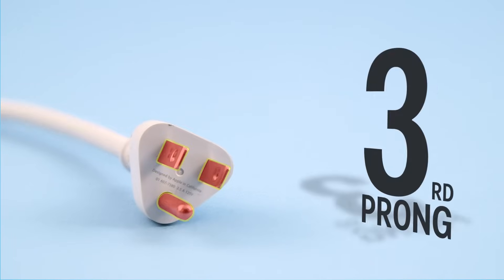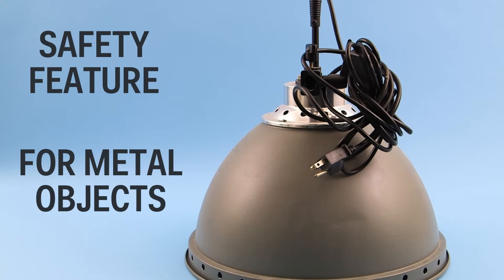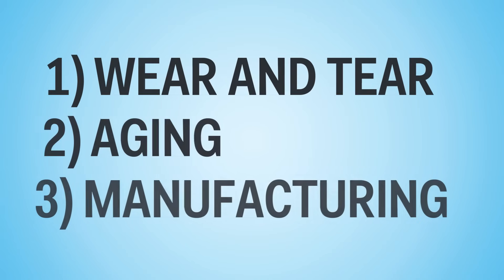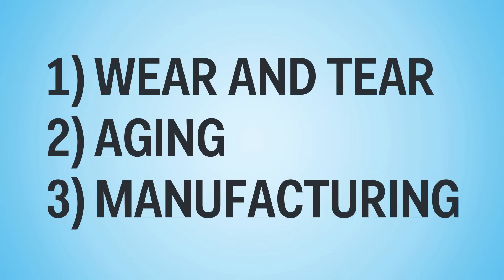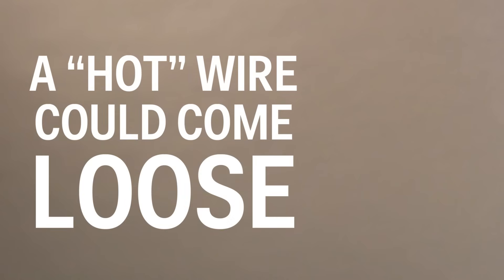This is why some appliances have the third prong. It's a safety feature for devices with metal cases. Through wear and tear, aging or faulty manufacturing, a hot wire from within the appliance could come loose and make contact with the metallic case.